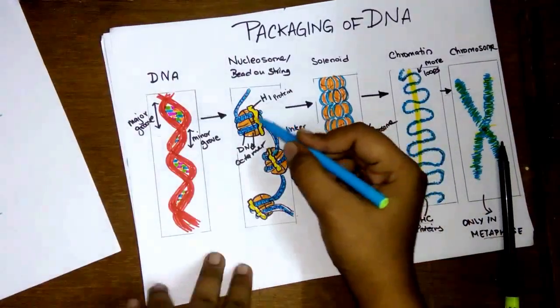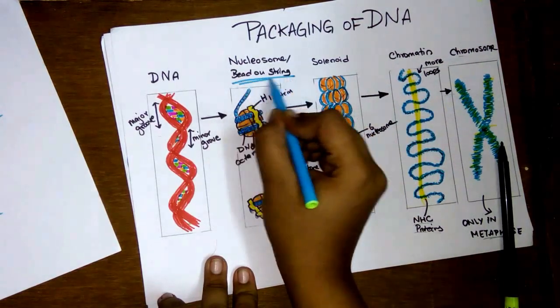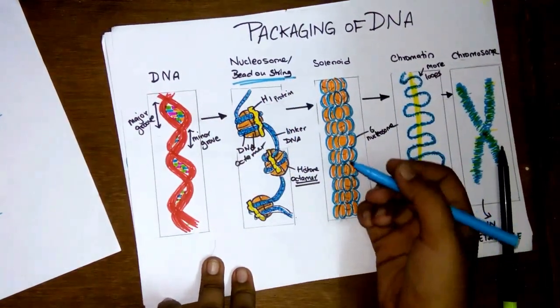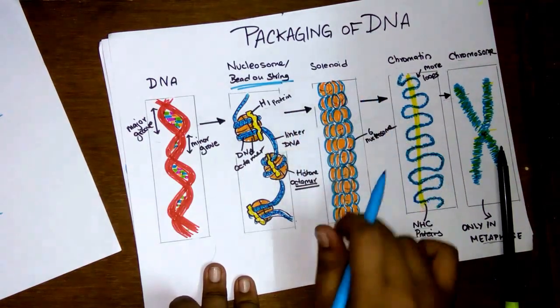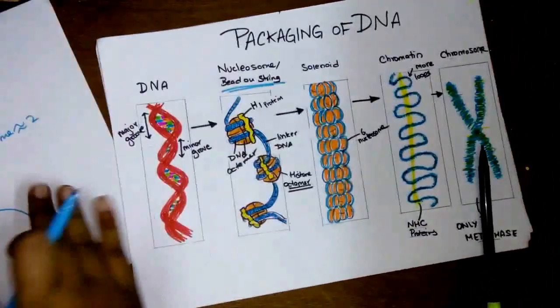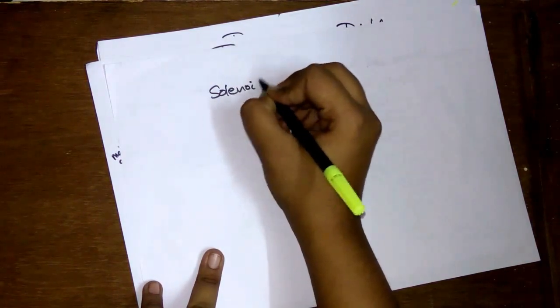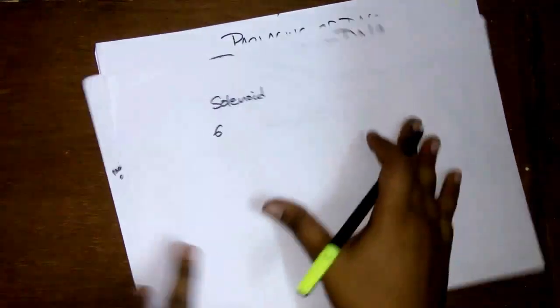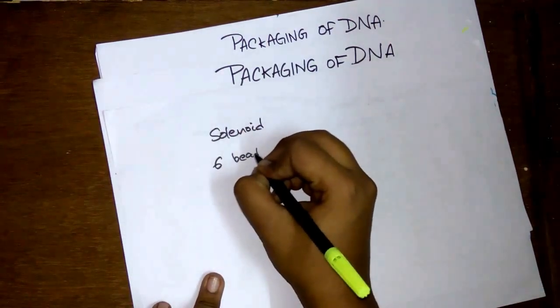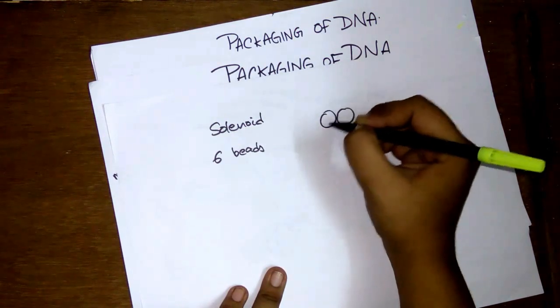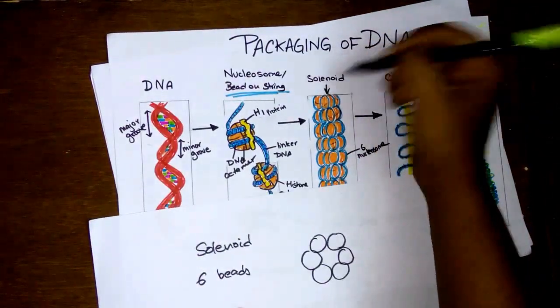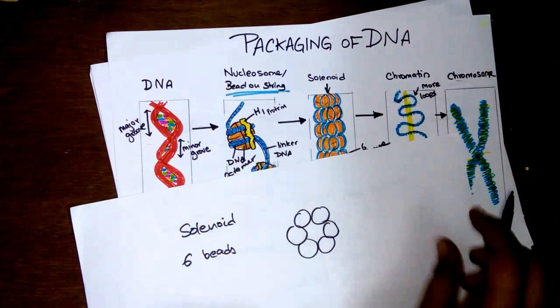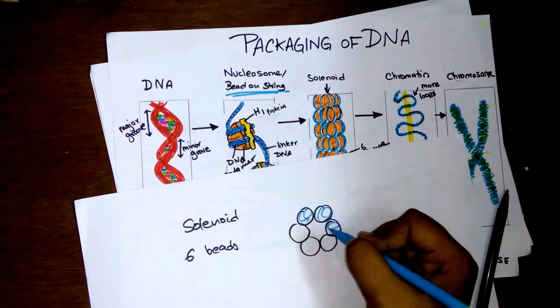It does this with all the other histone molecules and forms something that looks like beads on a string. Next, after this DNA packages to form a bead on a string model, it goes to form a solenoid. A solenoid is when six of those beads come together. If you look at this thing from the top view you can see something like this.